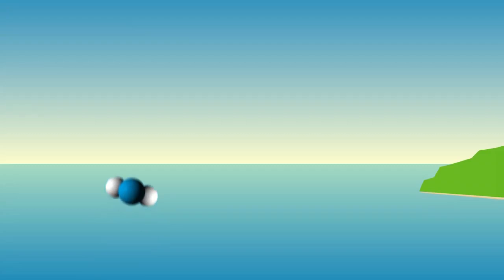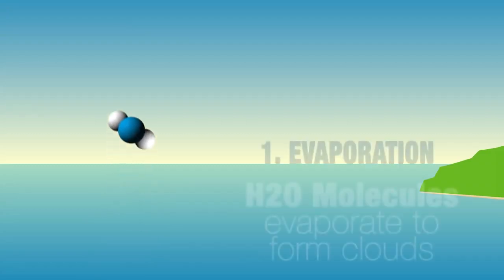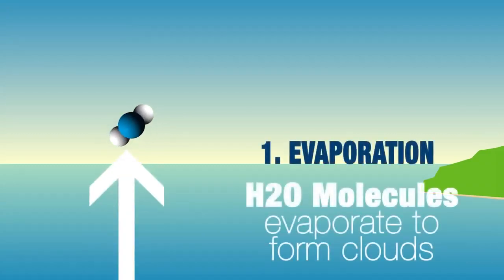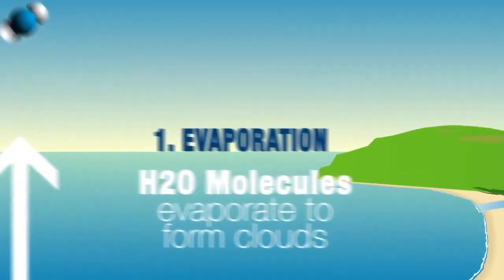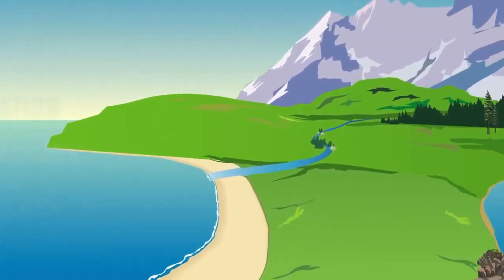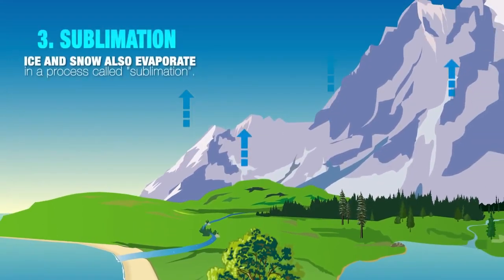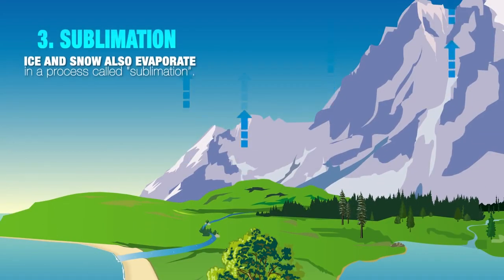Evaporation is when water absorbs heat energy from the Sun, which turns it into water vapor. Transpiration is a process in which trees release water vapor into the atmosphere. Sublimation is when ice and snow converts directly into water vapor.